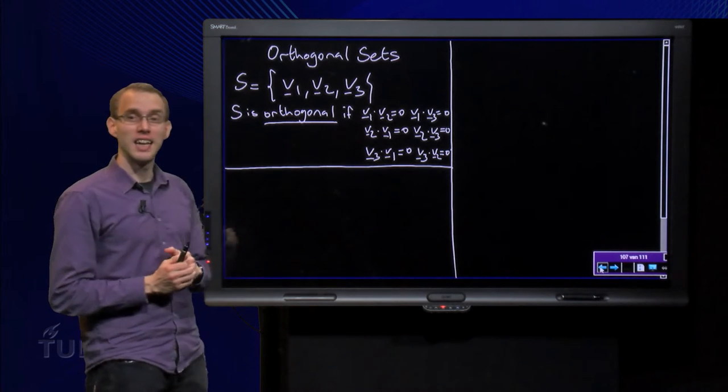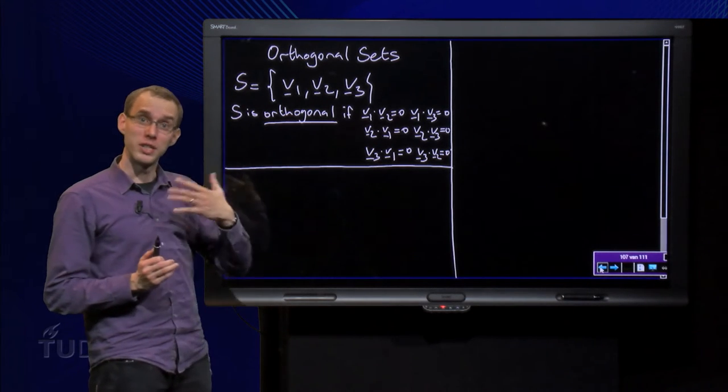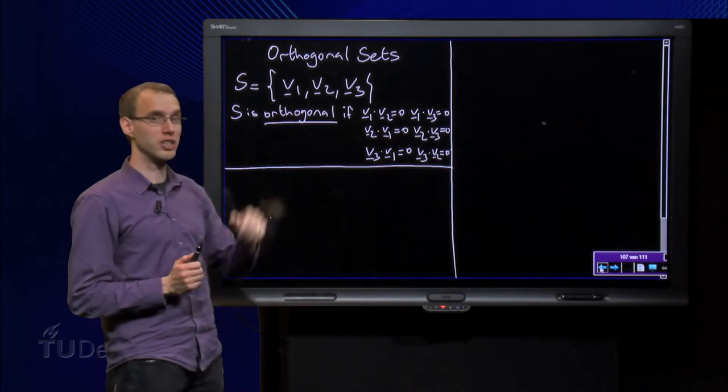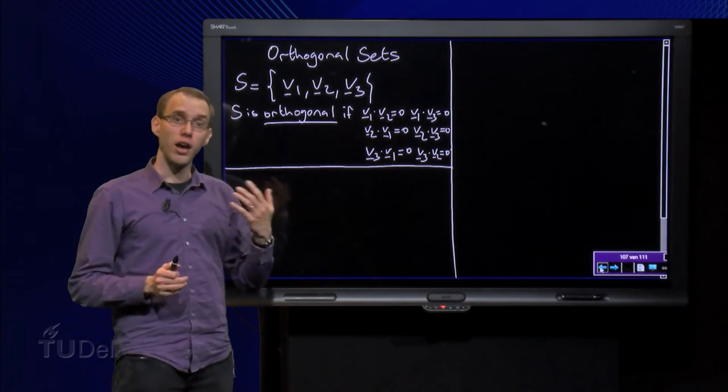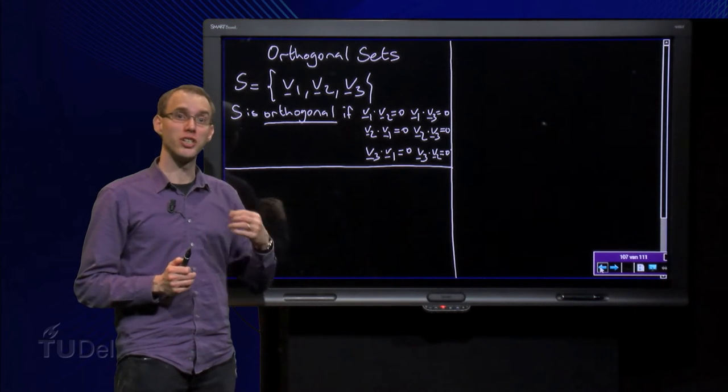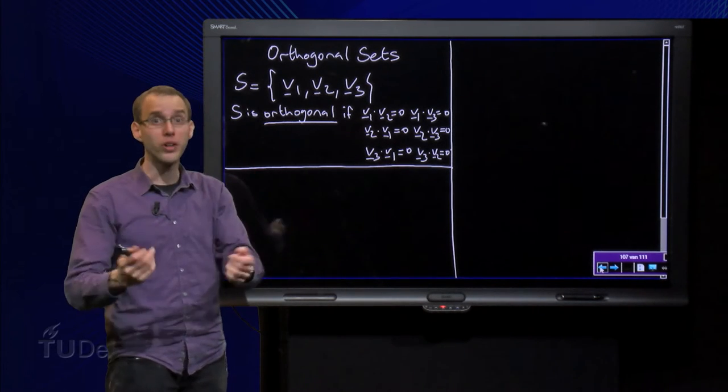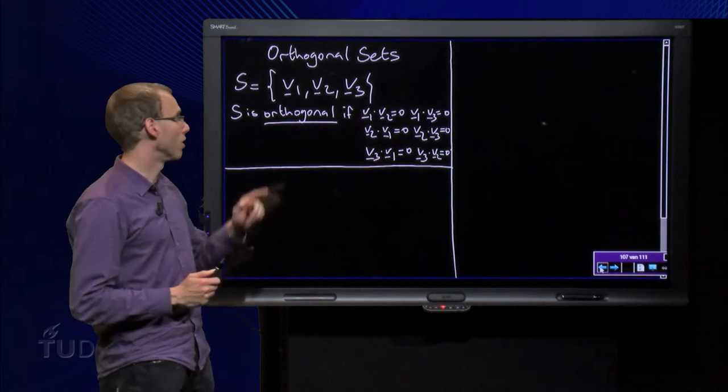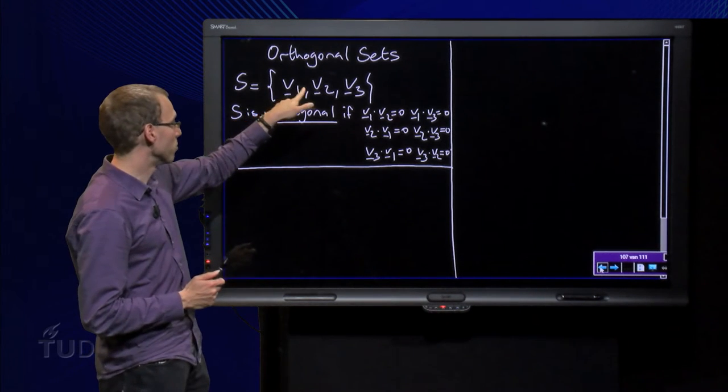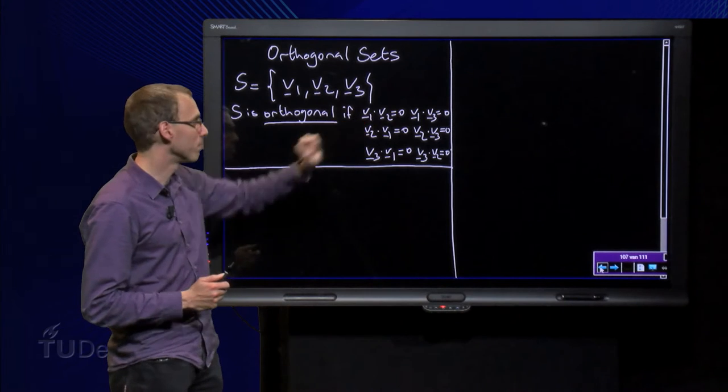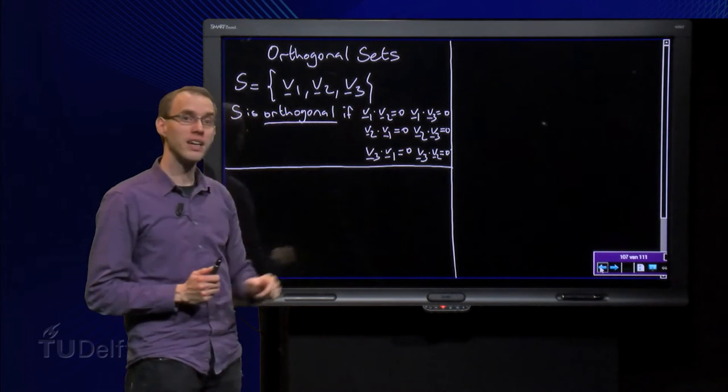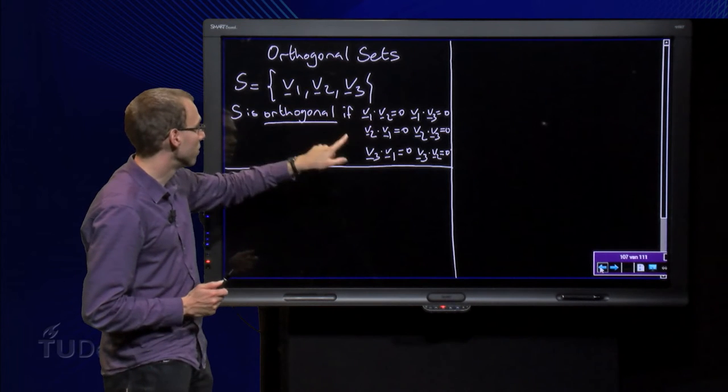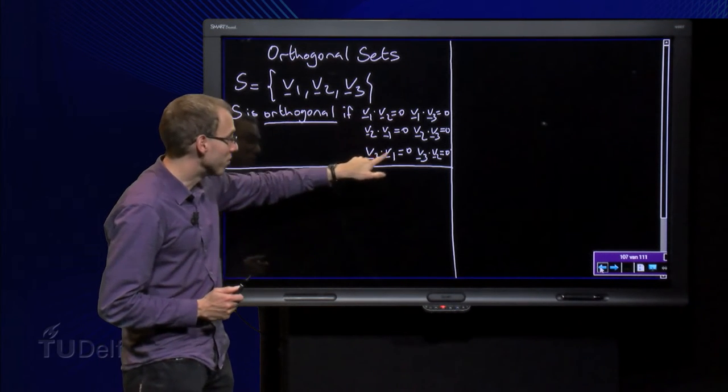We take as an example a set S of three vectors: V1, V2, and V3. An orthogonal set is a set such that any vector is orthogonal to all the other vectors of the set. So that means in this case that V1 has to be orthogonal to V2 and V3, V2 has to be orthogonal to V1 and V3, and V3 has to be orthogonal to V1 and V2.